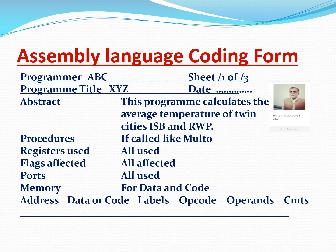The format is: first it is the address, then the data segment or the code segment, then you have the labels — like we had the 'start' label in our previous program. Then obviously you give the opcode, and then the operands, and then finally the comments. So this is the assembly language coding form.